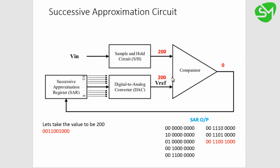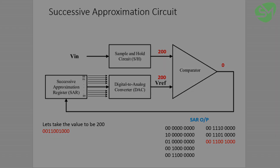Now the inverting and non-inverting terminals of the comparator are equal, so it does not output any signal, and the successive approximation circuit has approximated the analog signal it was receiving. This is the method used by most ADC modules inside a microcontroller. I hope you understood how an analog signal is converted into a digital signal using successive approximation. See you in the next lecture. Thank you.